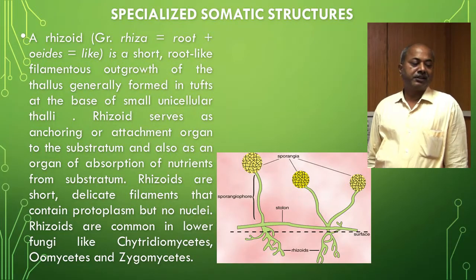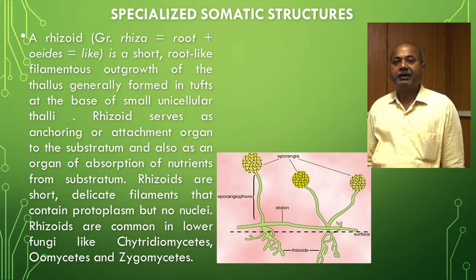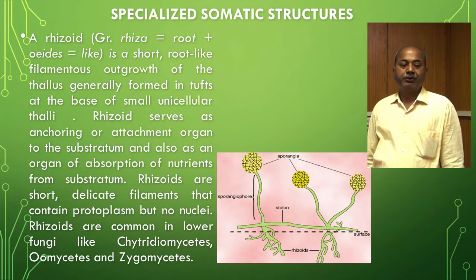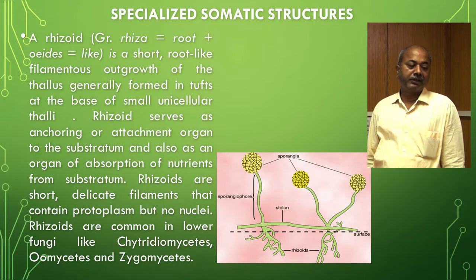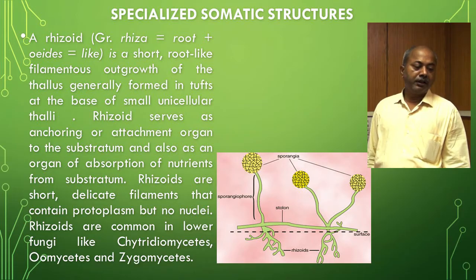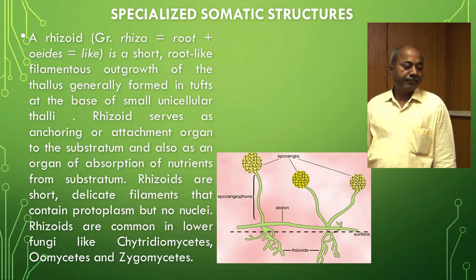There are some specialized somatic structures: rhizoids, rhizomorphs, sclerotia, prosenchyma, and pseudo-parenchyma. Rhizoids are short, root-like, filamentous outgrowths of the thallus, generally formed in tufts at the base of small unicellular thalli. They are anchoring and absorption organs. Rhizoids are short delicate filaments that contain protoplasm but no nuclei, and are common in lower fungi like Chytridiomycetes, Oomycetes, and Zygomycetes.